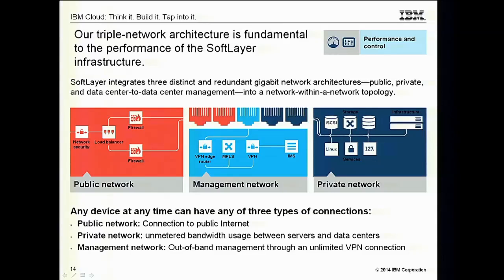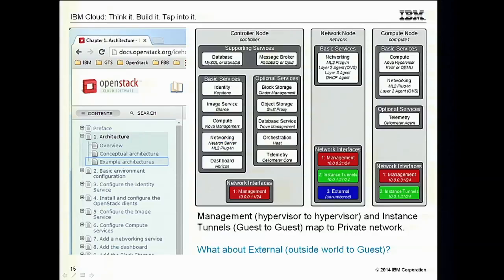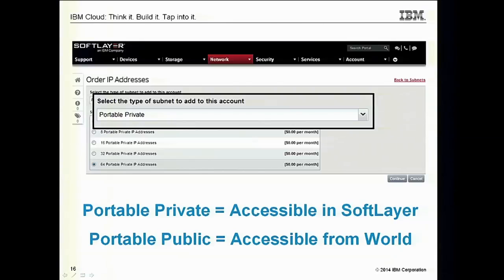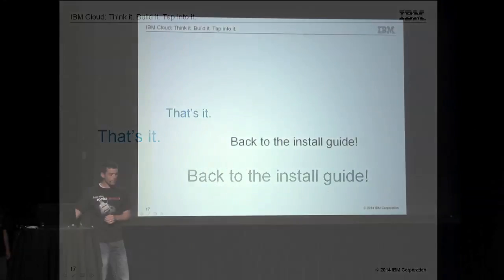All SoftLayer systems come with three networks: a public network that is metered, a private network that is unmetered, and a management network for out-of-band management. Looking at the reference architecture, there were three networks to connect to. The management network, hypervisor-to-hypervisor communication, and the instance tunnels — which are guest to guest — map right to the SoftLayer private network for all that connectivity, unmetered with no charges. For external access outside of the guest, I went back to the SoftLayer portal and got a portable private subnet — accessible only within SoftLayer, again no charge.